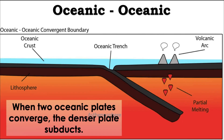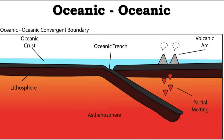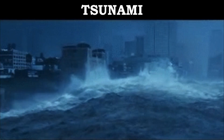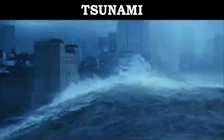When two oceanic plates converge, the denser plate subducts. Once its leading edge reaches the mantle, it melts into magma, builds up pressure that makes it push the ground above it, forming a volcanic island. At the collision zone, a crack called a trench is formed. This depression could cause shaking of the ground, or an earthquake. The overriding plate may push a large amount of water, causing it to flip upwards, forming a tsunami.